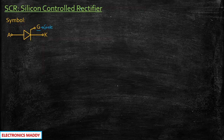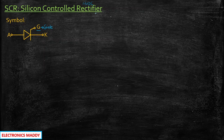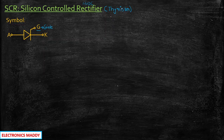SCR is used in rectifier applications and is popularly used in high voltage DC applications — that is why the name silicon controlled rectifier is given to it. It is also referred to as a thyristor, and this device belongs to the thyristor family. Some other devices in this family include gate turn-off thyristors, and several other devices have been recently invented as well.